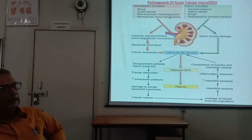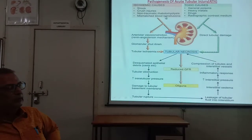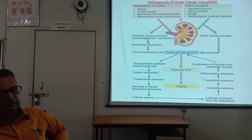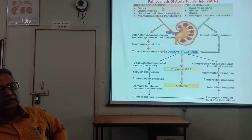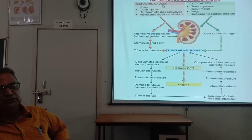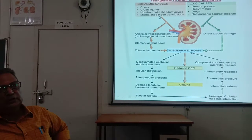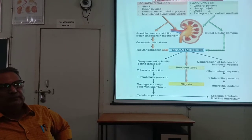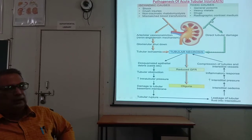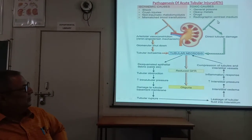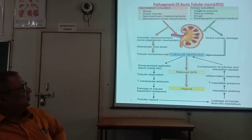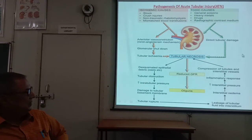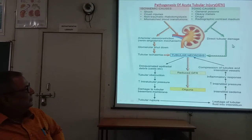Ischemic causes are more common and include shock, crush injury, mismatched blood transfusion, and less commonly non-traumatic rhabdomyolysis. These are the four important causes of ischemic tubular necrosis. Toxic causes include general poisons, heavy metals, drugs, and radiographic contrast media. Specific drugs and heavy metals will be discussed in subsequent slides.